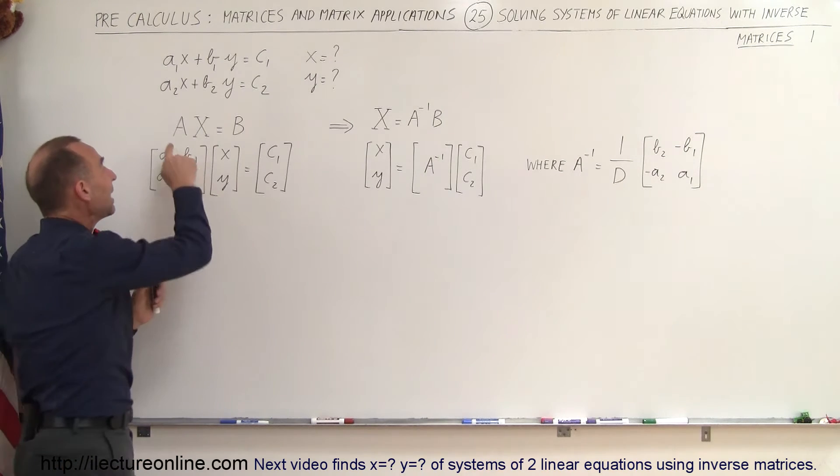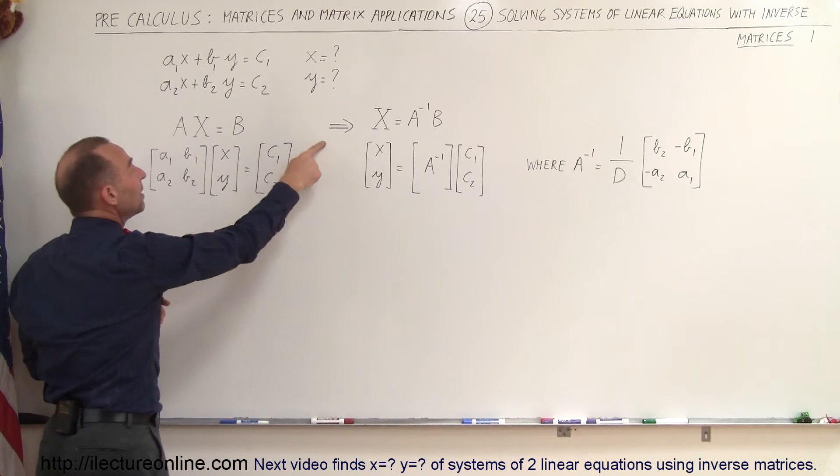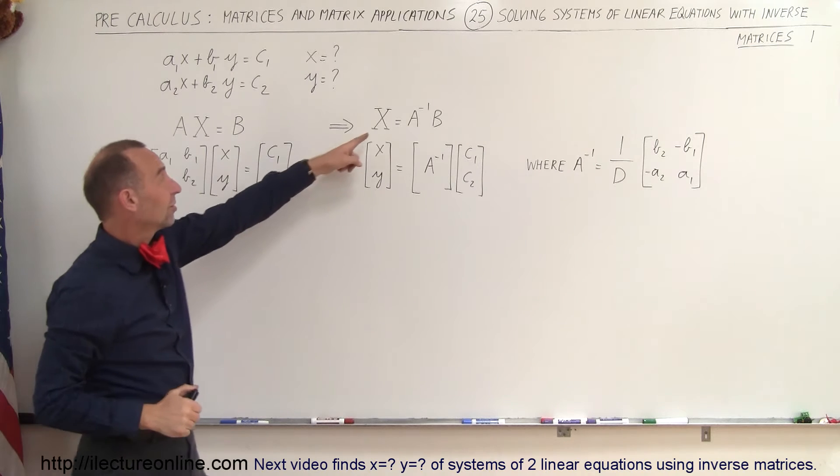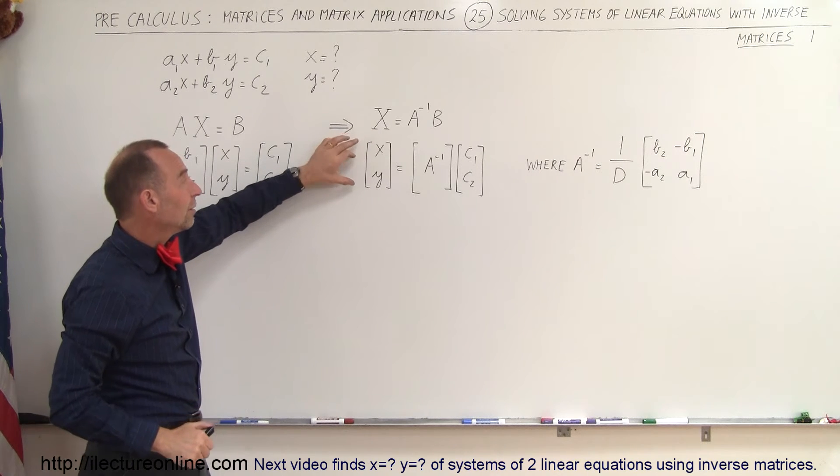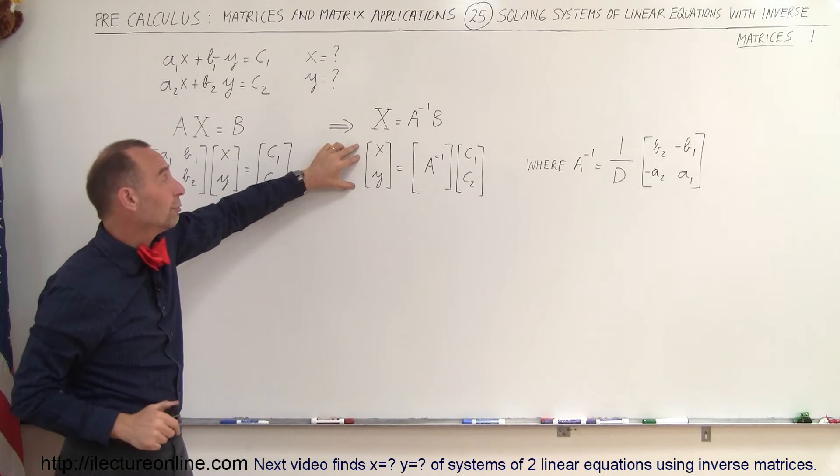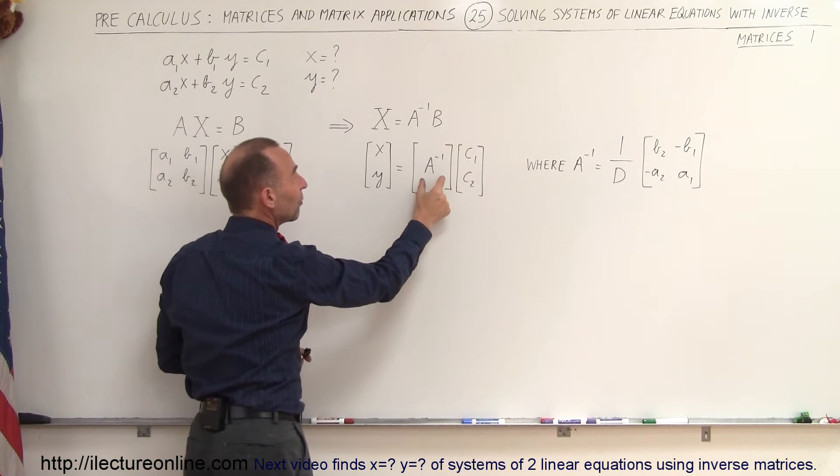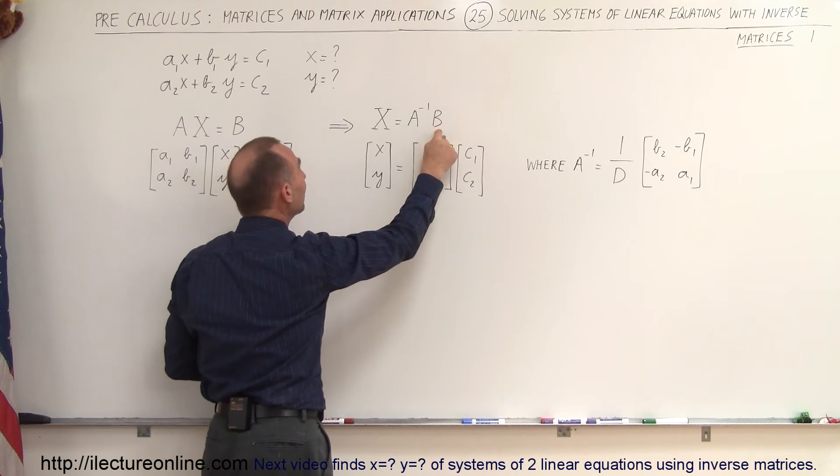Now, if A times x equals b, that means that x is equal to A inverse times b. And since the x matrix is equal to the variables x and y that we're looking for, we can then solve for these variables by simply finding the inverse of the matrix A and multiplying that times the matrix B, which is simply the constants on the right side of the equal sign.